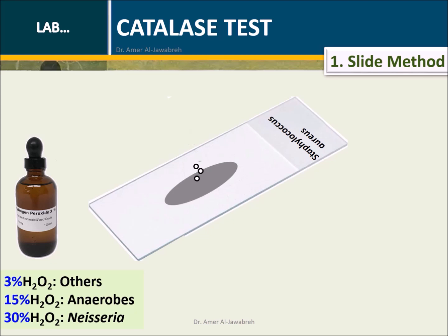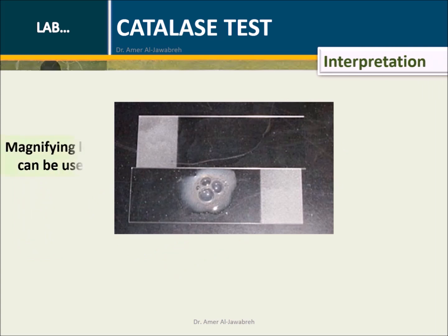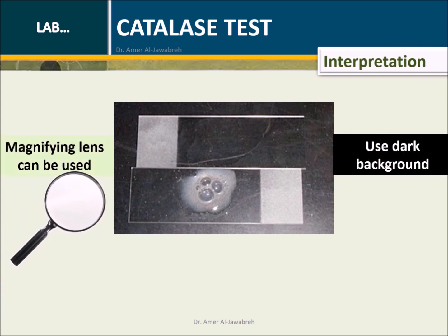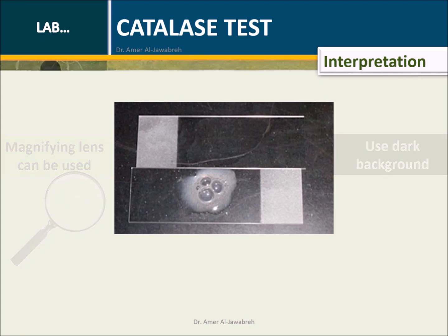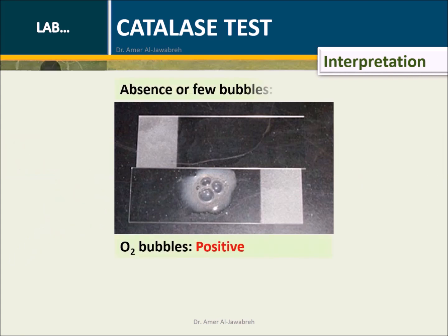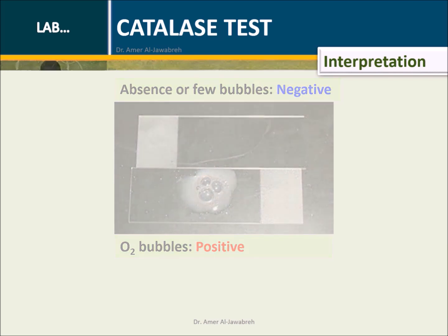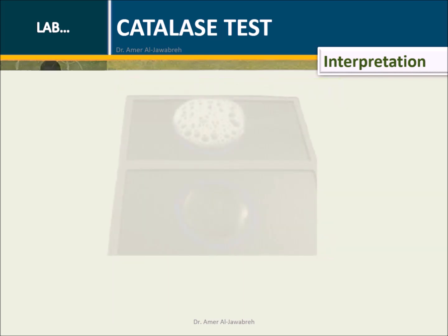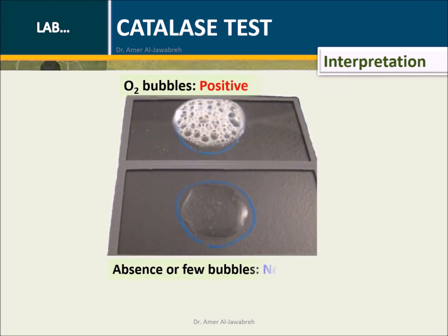Observe for immediate presence of bubble formation. Repeat the procedure for the other two bacteria. Interpretation: a magnifying lens can be used. Dark background enhances visualization. Presence of oxygen bubbles indicates positive results; absence or few bubbles indicates negative results.